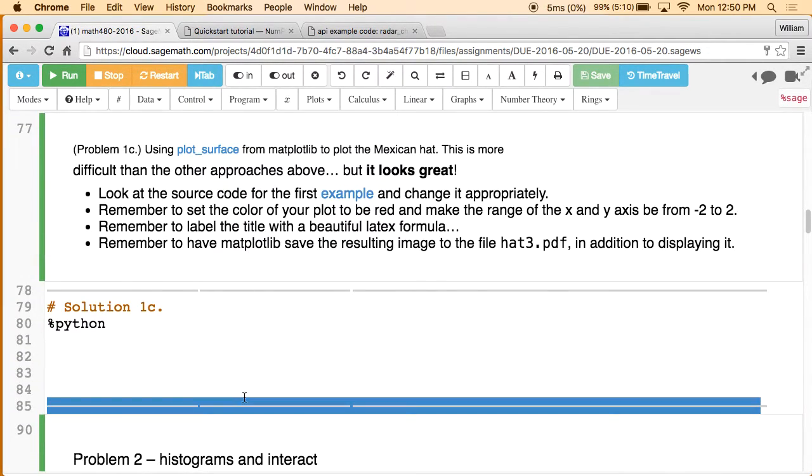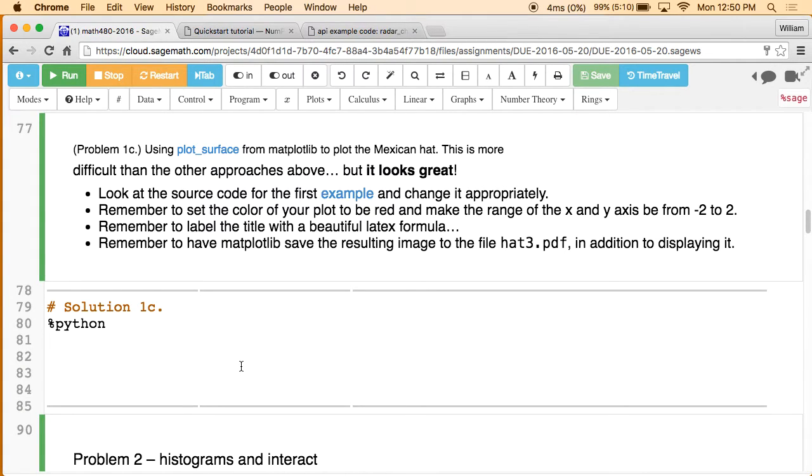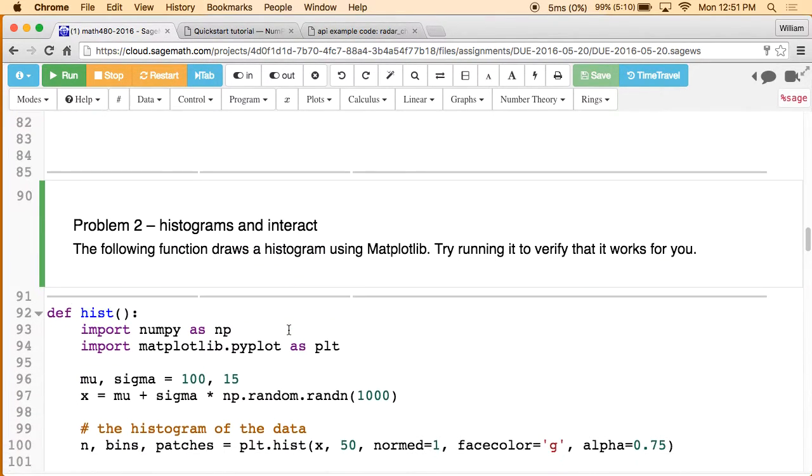You'll draw it using Sage's 3D plotting plus Tachyon. Then the third part of the problem is you're going to draw this Mexican hat surface, but instead using Matplotlib, which has its own 3D plotting capability. Here one nice thing is that it produces a nice PDF image. It's a vector graphic, which you can include in a LaTeX document or a Word document, and it looks publication quality. So it's something you can really put in a paper that you'd submit. And it does a really good job of rendering LaTeX formulas and so on. You'll get a nice 3D image this way, but it's a little bit more painful to use.